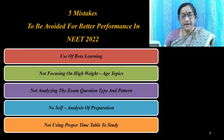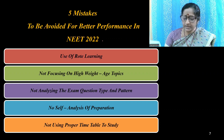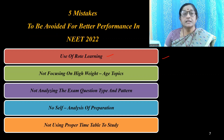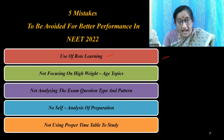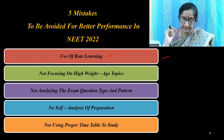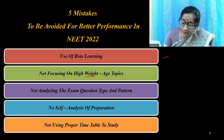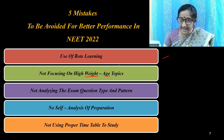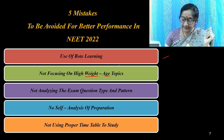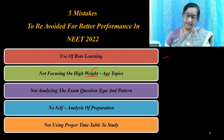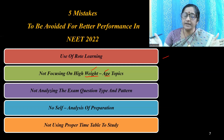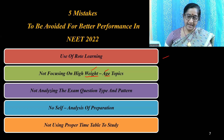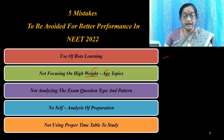Five mistakes to avoid for better performance in 2022: First, use of rote learning — memorizing specific items as they are encountered without understanding. Second, not focusing on weightage topics. 'Weight' means topics having more gravity or importance, and 'age' means frequently asked topics.